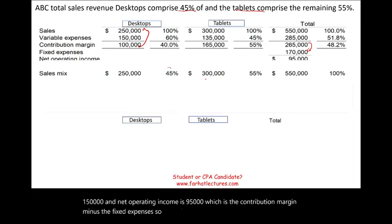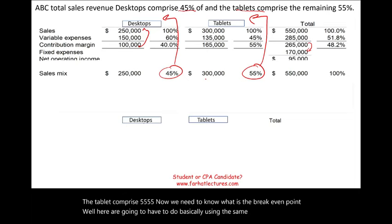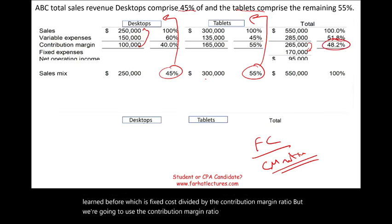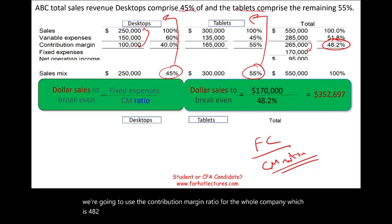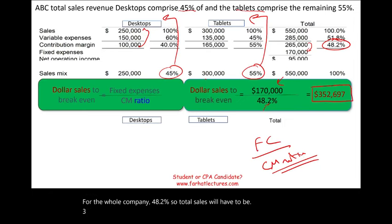The sales mix again: the desktop is 45% and the tablet is 55%. Now we need to find the break-even point. We use the same concept as before — fixed cost divided by the contribution margin ratio — but we use the contribution margin ratio for the whole company, which is 48.2%. So: fixed cost of 170,000 divided by 48.2% gives us total required sales of 352,697.